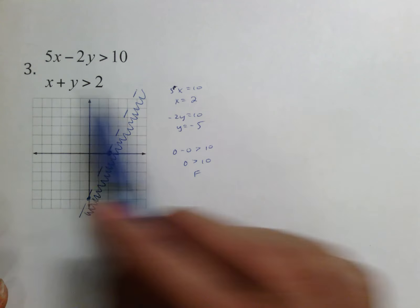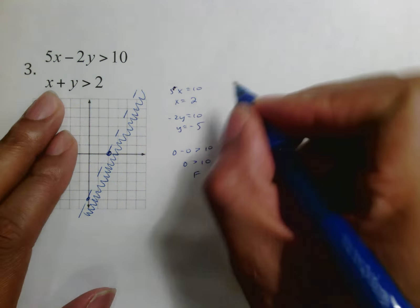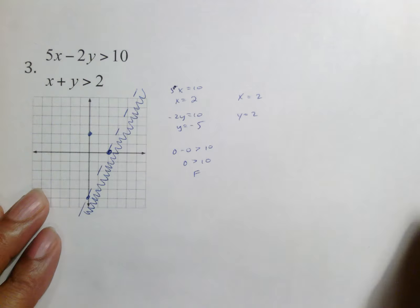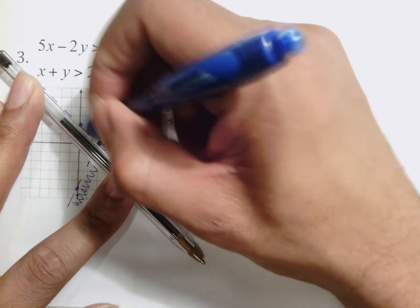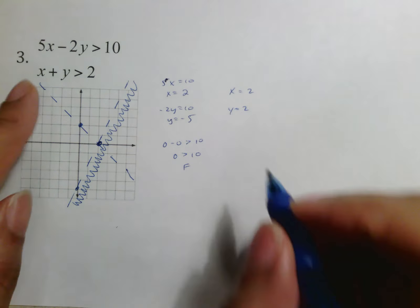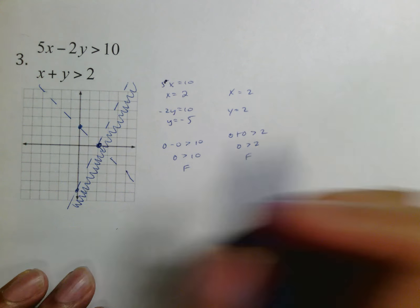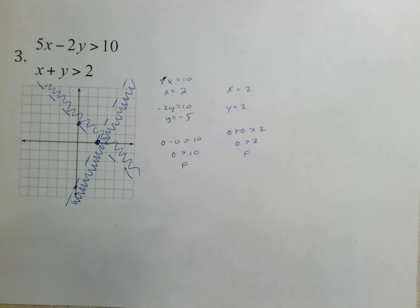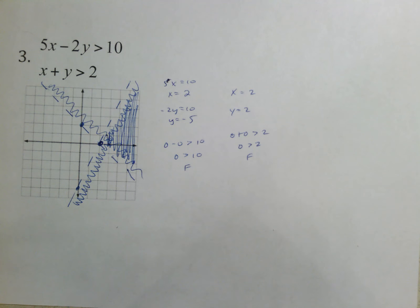Pause the video to get the information for the second graph. This one is straightforward: X = 2 gives your dot, and Y = 2 gives your second dot. This also has no equal-to portion, so draw a dashed line. Testing (0, 0): 0 + 0 < 2 — I don't think that's true, so we jump across the line and put the alligator teeth on the opposite side. Looking at both sets of teeth, we end up shading over here.